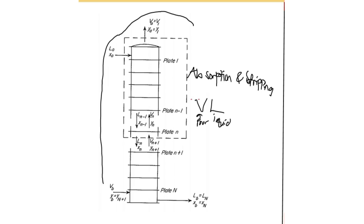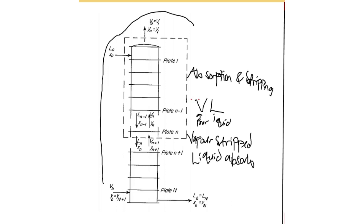Absorption is a process whereby the vapor phase enters the separation column and mixes with the liquid phase. The vapor phase carries the material we need to remove, and the liquid washes that substance from the vapor phase — the liquid absorbs the material from the vapor. For stripping, it's the opposite: the liquid carries the material we need to strip, the vapor phase washes away the contents from the liquid. So: liquid absorbs from gas, vapor strips from liquid.